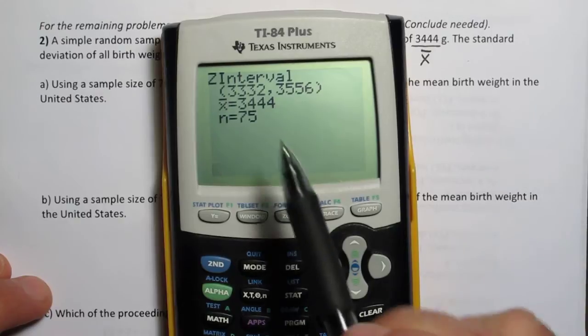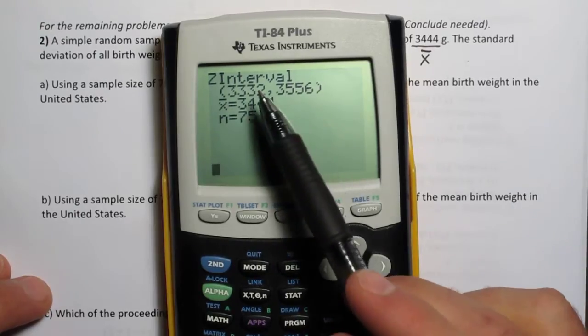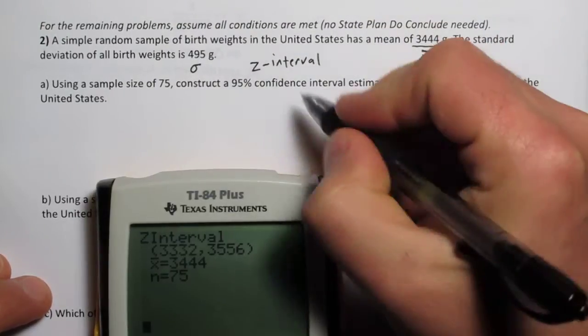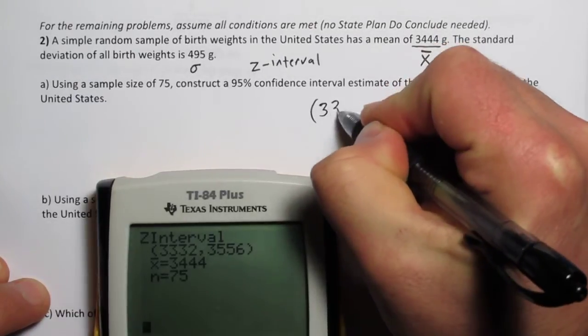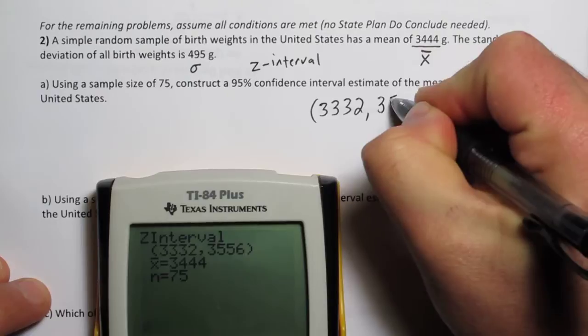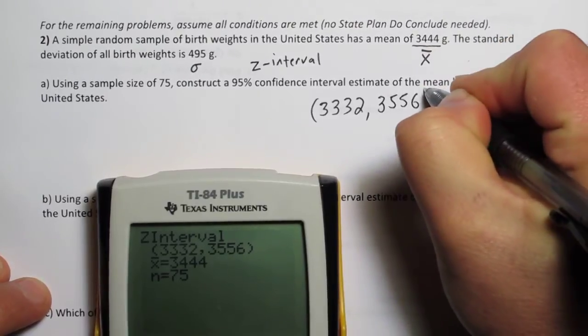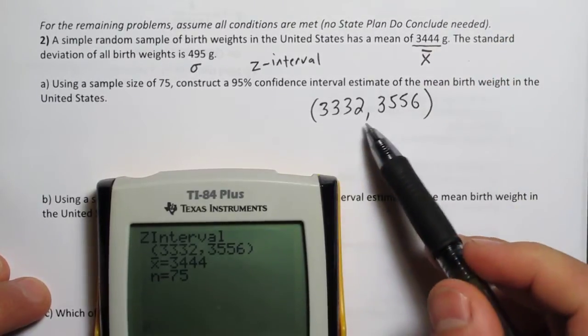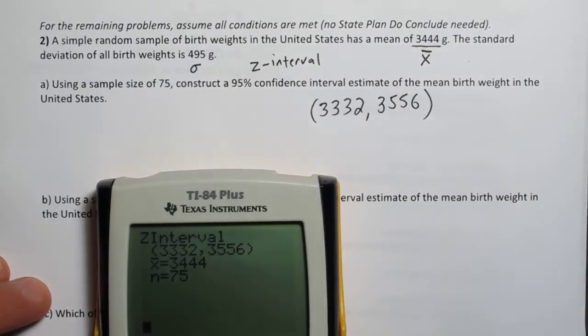All right, so here is our interval. So let's write that down. 3332, 3556. So 3332 to 3556.